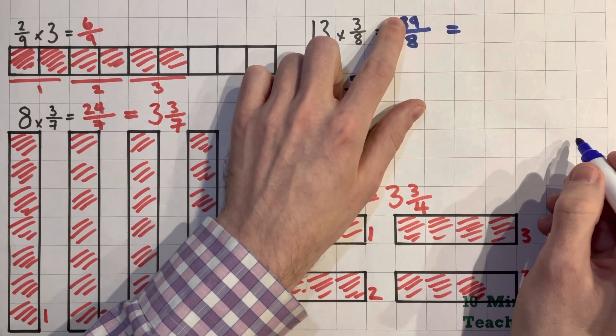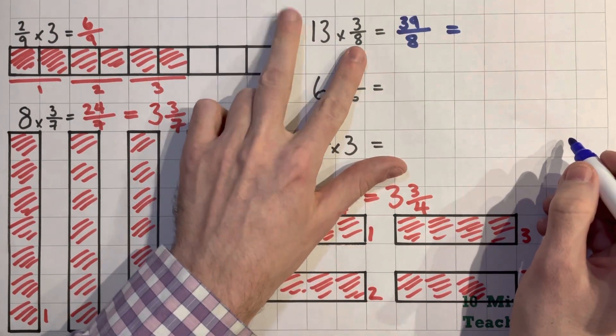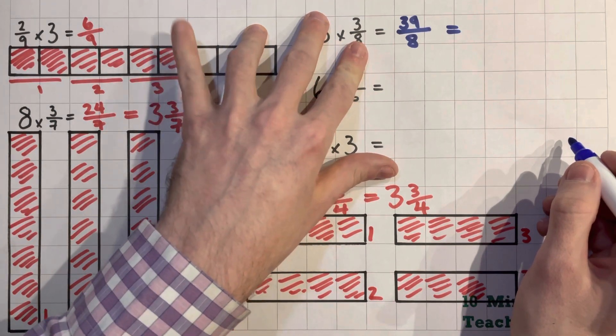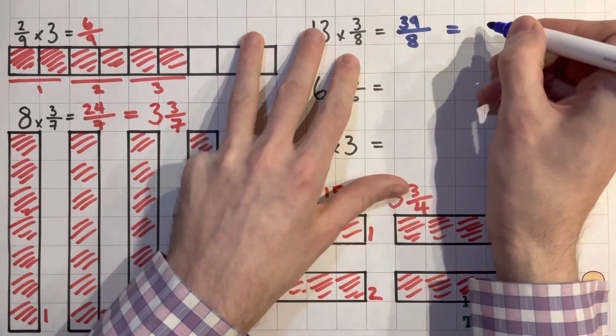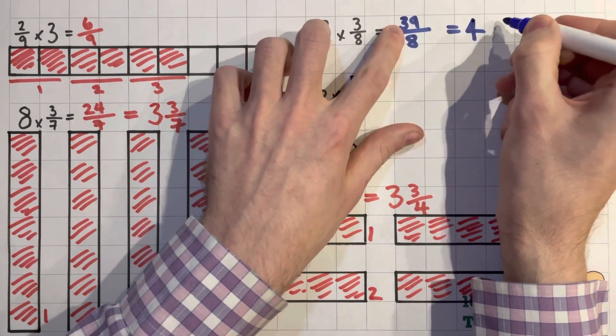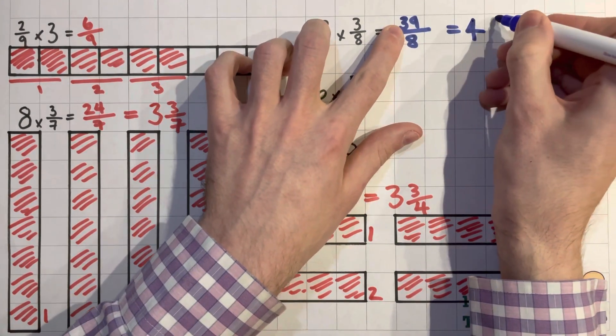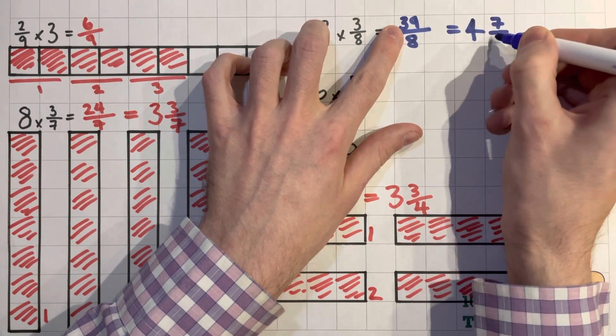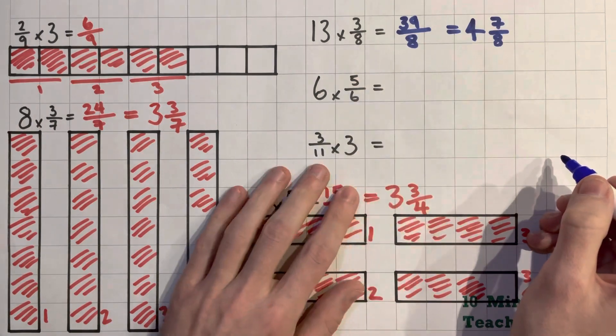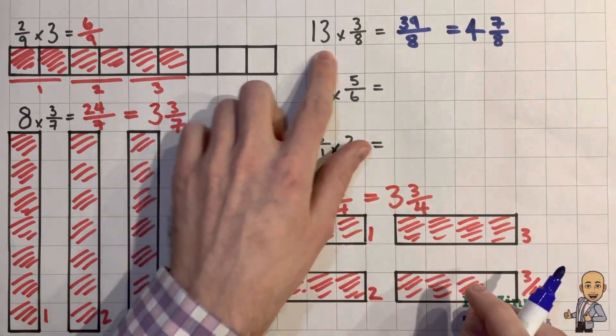So let's have a little look at this. Then we can convert this into our mixed number. So how many eighths can I fit in 39? Well, 8, 16, 24, 32. 40 is too far. So we've got four whole ones. And then we've got, so we're at 32. Then we've got seven eighths left over. So four whole ones and seven eighths. Let's give this next one a little go as well.